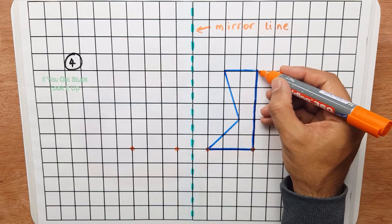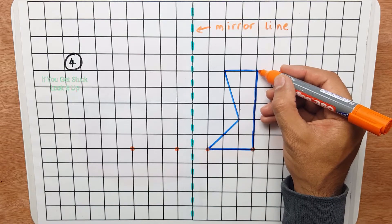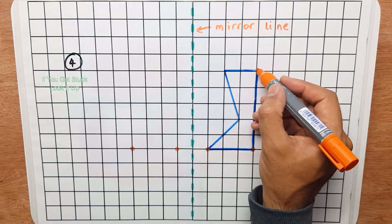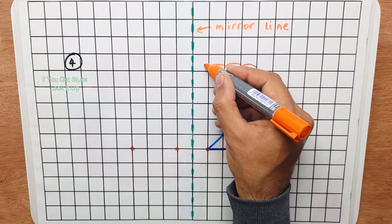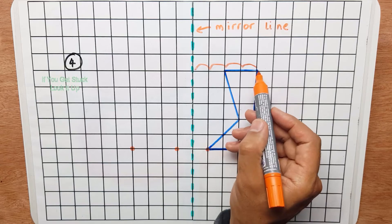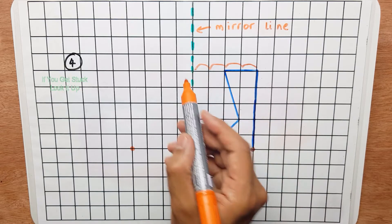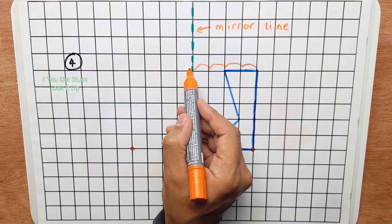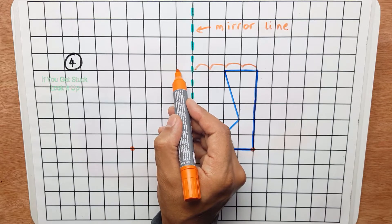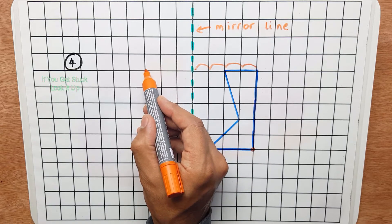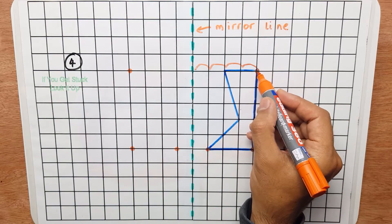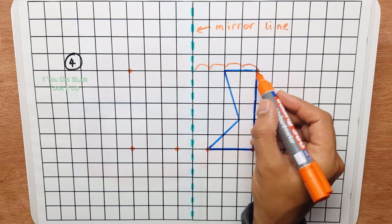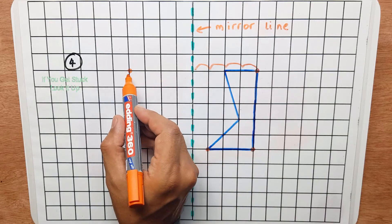Now let's do the same thing for this vertex or corner. So there's one, two, three, four jumps from there to the mirror line. So I have to now do four jumps back out. One, two, three, four. So this point here reflected in this mirror line ends up here.